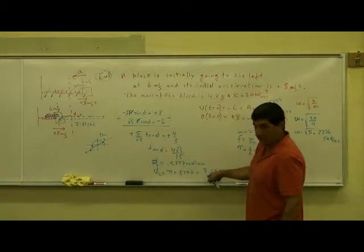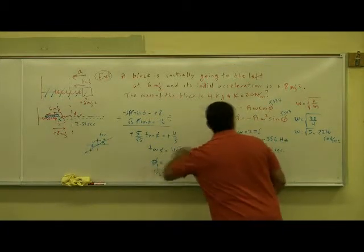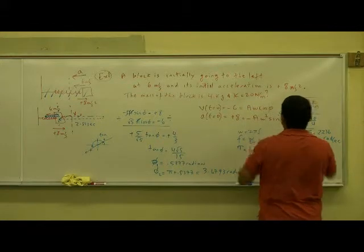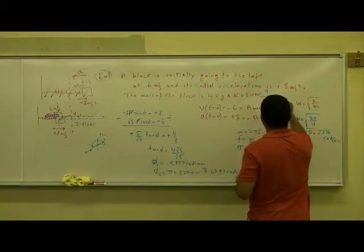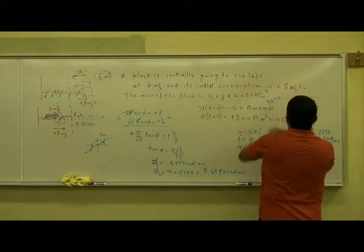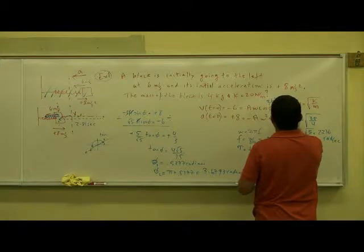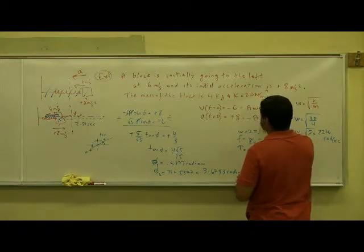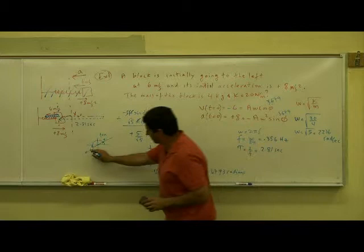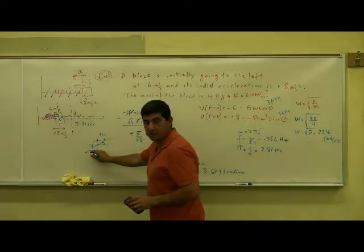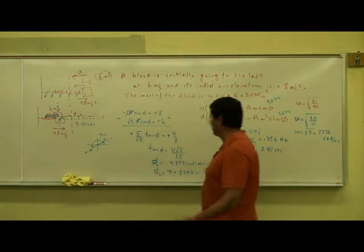I need to get the other answer, 3.679. Now you take cosine of 3.679, that's in the third quadrant. Cosine is what in that third quadrant? Negative, right?